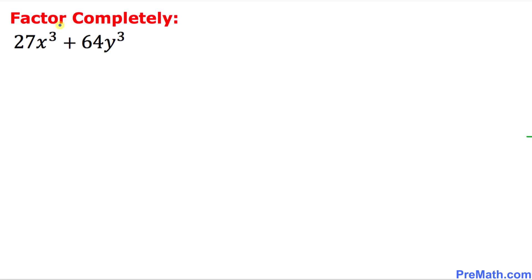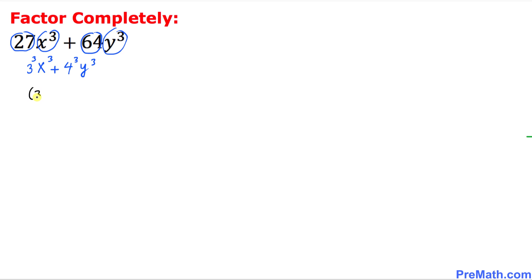Here is our next example: factor completely 27x³ + 64y³. Let's go ahead and manipulate a little bit. 27 can be written as 3³, leaving x³ as it is. Likewise, 64 can be written as 4³ — that means 4 × 4 × 4 — and then we leave y³. So this can be written as (3x)³ + (4y)³, which represents the sum of two cubes.